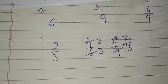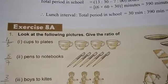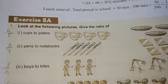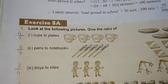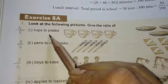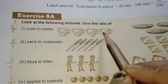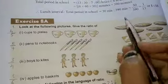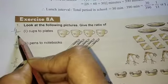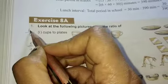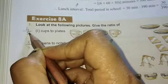Ratio means comparison of two quantities. So now we know what is the meaning of ratio, then we will start doing exercise 8a. Look at the following picture, give the ratio of cup to plate. So first we have to count cup, then we have to count plate and we will write in numerator cup and denominator plate. This is four by five. Just see.